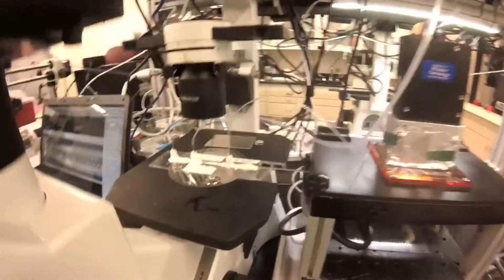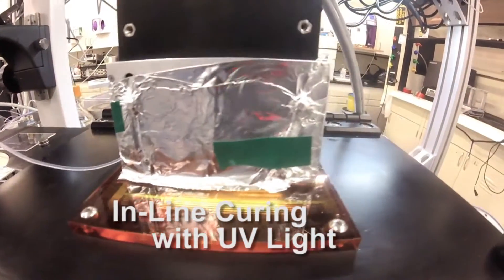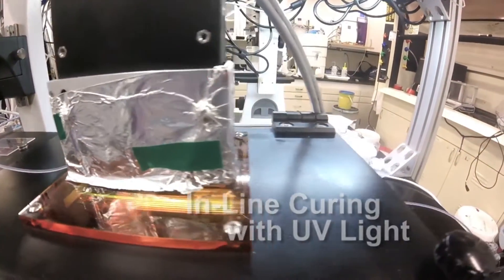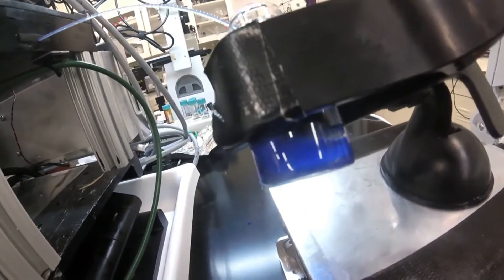After the drops are generated, they run into this in-line curing unit which has UV light to cure the polymer in the shell phase. Eventually, you get capsules coming out of the tubing which are then collected and used for CO2 capture.